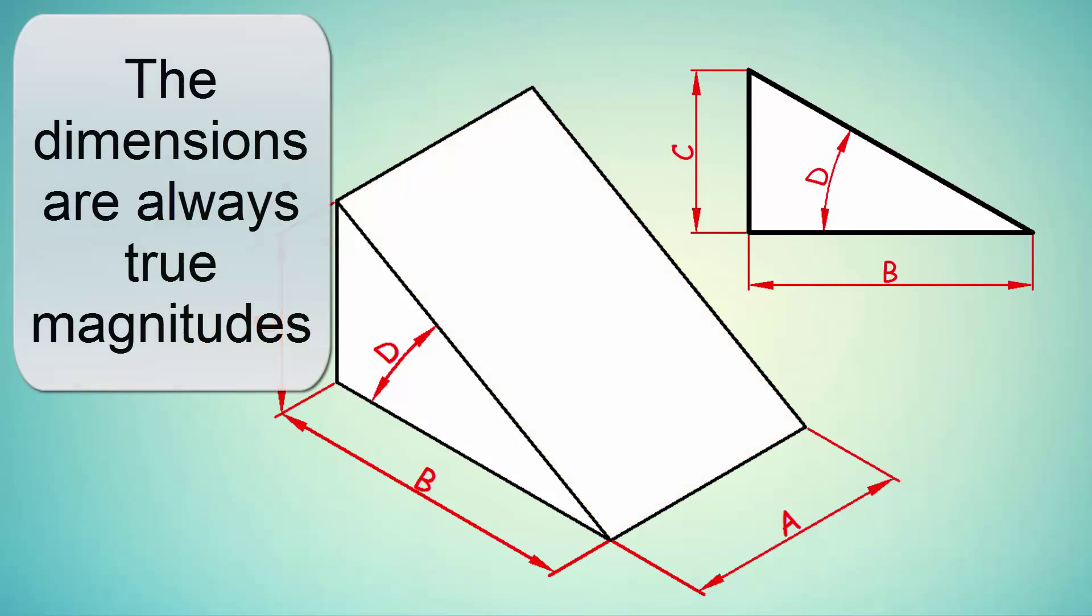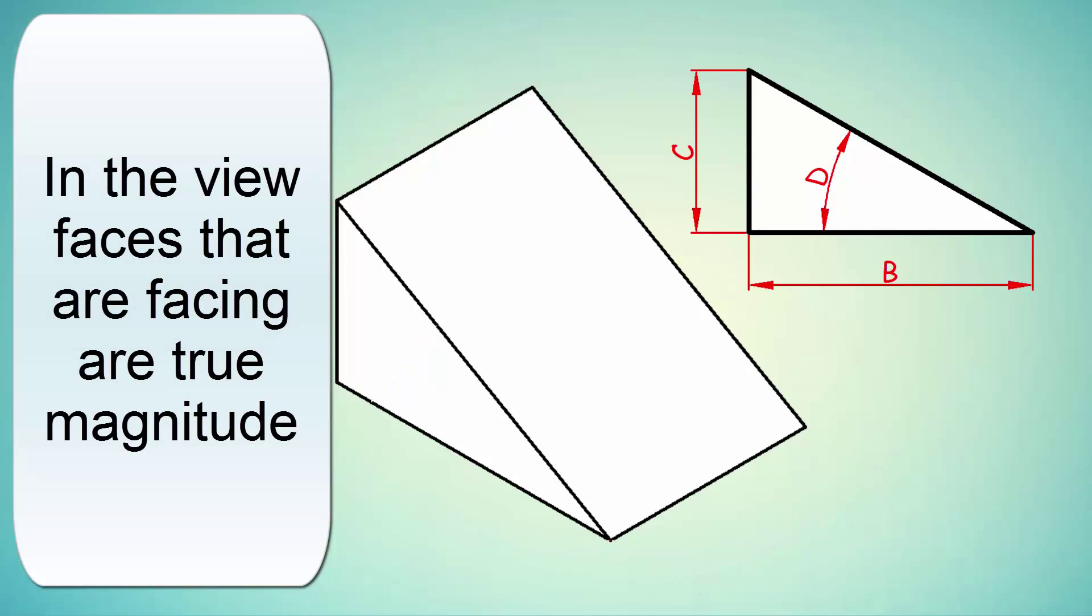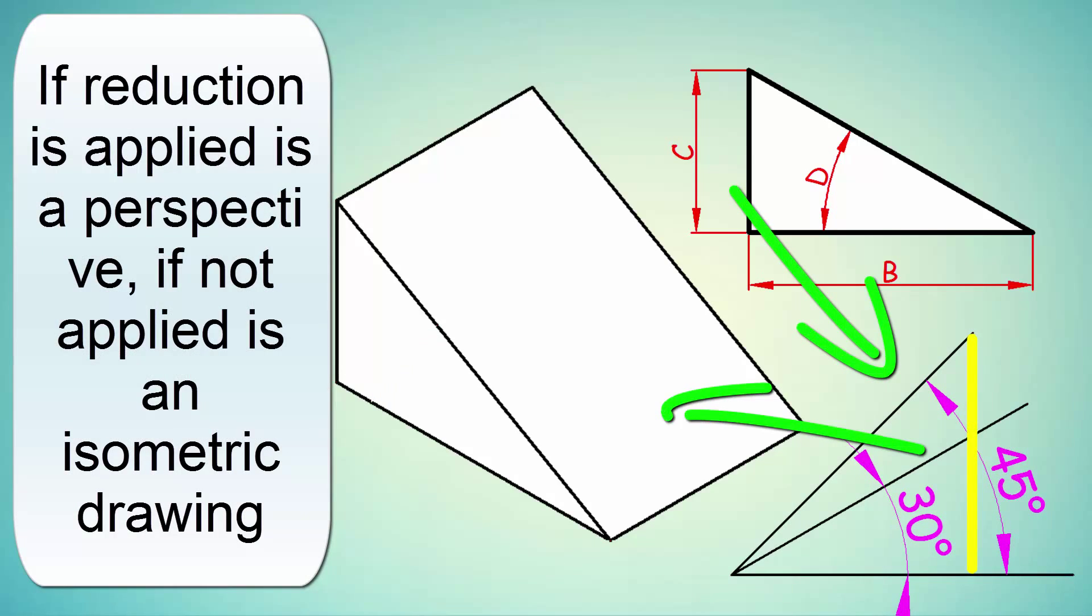I remind you that the dimensions in the views are true magnitudes, and when these measures are relocated to perspective, you should apply the reduction coefficient when working with isometric perspective, or not use it if you want to draw an isometric picture.